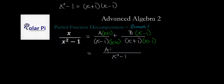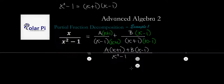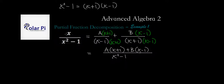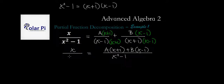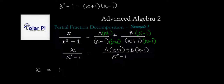In the numerator we have A times x plus one, plus B times x minus one. But this right-hand side is still equal to the left-hand side. So on the left side we have x divided by x squared minus one. Since the denominators are the same on both sides, to make the left side equal the right side, we only require that the numerator on the left equals the numerator on the right. That is, we require x to equal A times x plus one, plus B times x minus one.